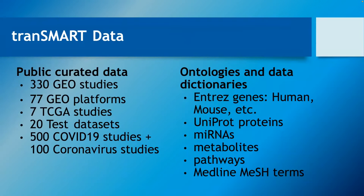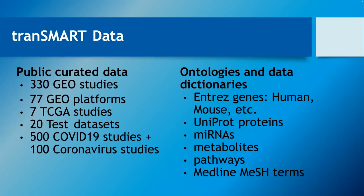We have more than 300 publicly curated studies — a lot came out of the eTRIKS project, and others were contributed by early contributors to the open-source data curation. There are multiple GEO platforms for gene expression, and for RNA-seq it's gene collections from various species. For the KOBE data we had about 10 species involved. We've had a bunch of Cancer Genome Atlas studies contributed by pharmaceutical industry partners and academics, plus test datasets.